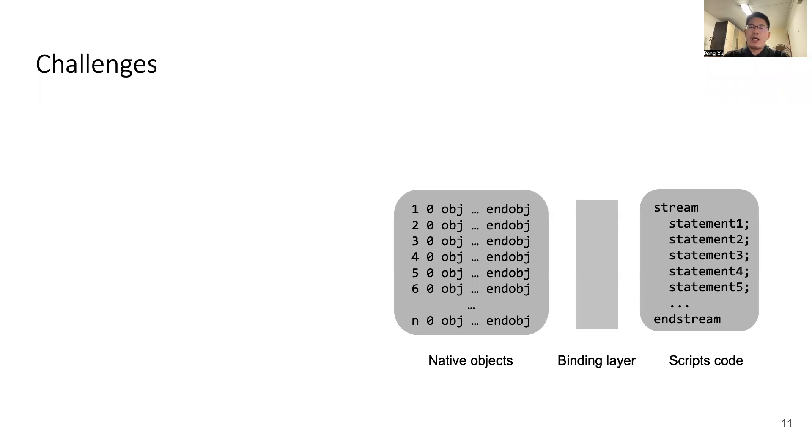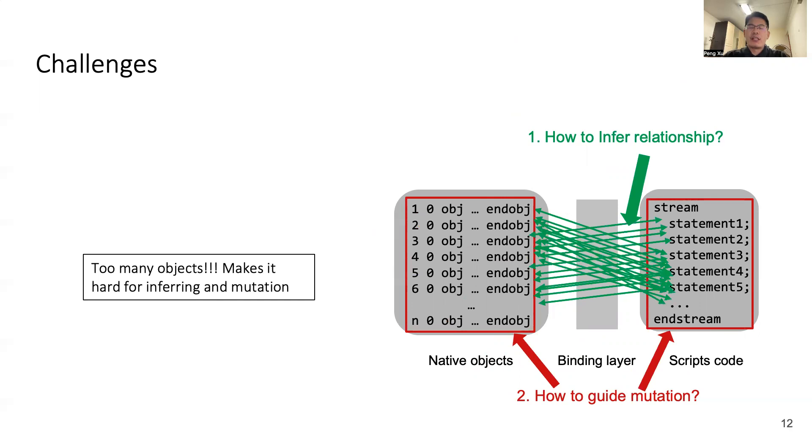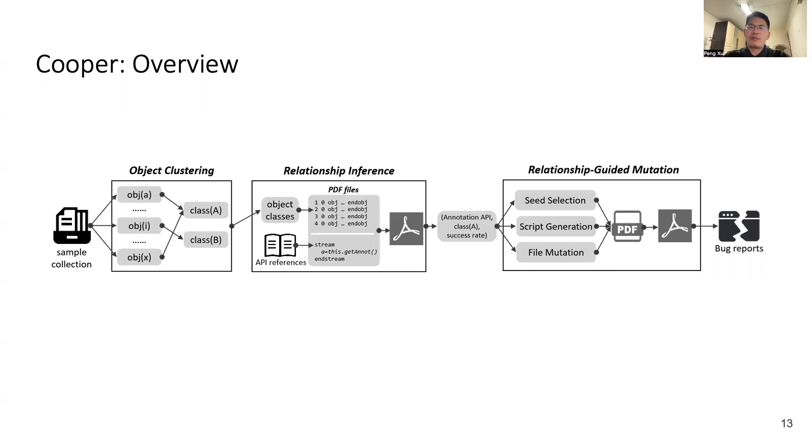Our method is straightforward, but there are several challenges to be solved. The first challenge is how to infer the relationship between native objects and scripts code. Once we have the relationship, we need to solve the second challenge: how to use the inferred relationship to guide mutation. However, when we solve these two challenges, we encounter a new problem: there are so many native objects. That means we will have a huge search space for inferring relationship and guiding mutation. It's not doable. To solve this problem, we need to reduce the search space. We plan to categorize all native objects into different classes according to their semantic feature. So, let's come to our challenge: how to cluster native objects into semantic similar classes.